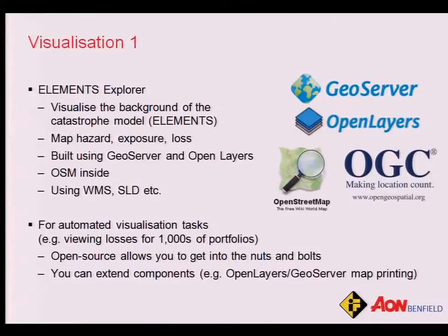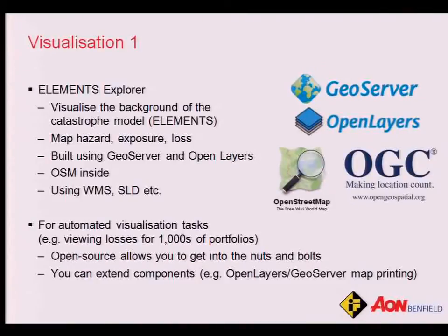For visualization, we're using a variety of open source tools. We've created a tool called Elements Explorer that lets you map the outputs from the model. It's built using GeoServer and OpenLayers, with an OpenStreetMap background. We're also serving data out as Web Map Services and creating style files — one or two megabyte SLD files — to allow users to change classifications of the data they see. Using open source is allowing us to get into the nuts and bolts, underneath the hood, and we're much more easily able to extend the software too.